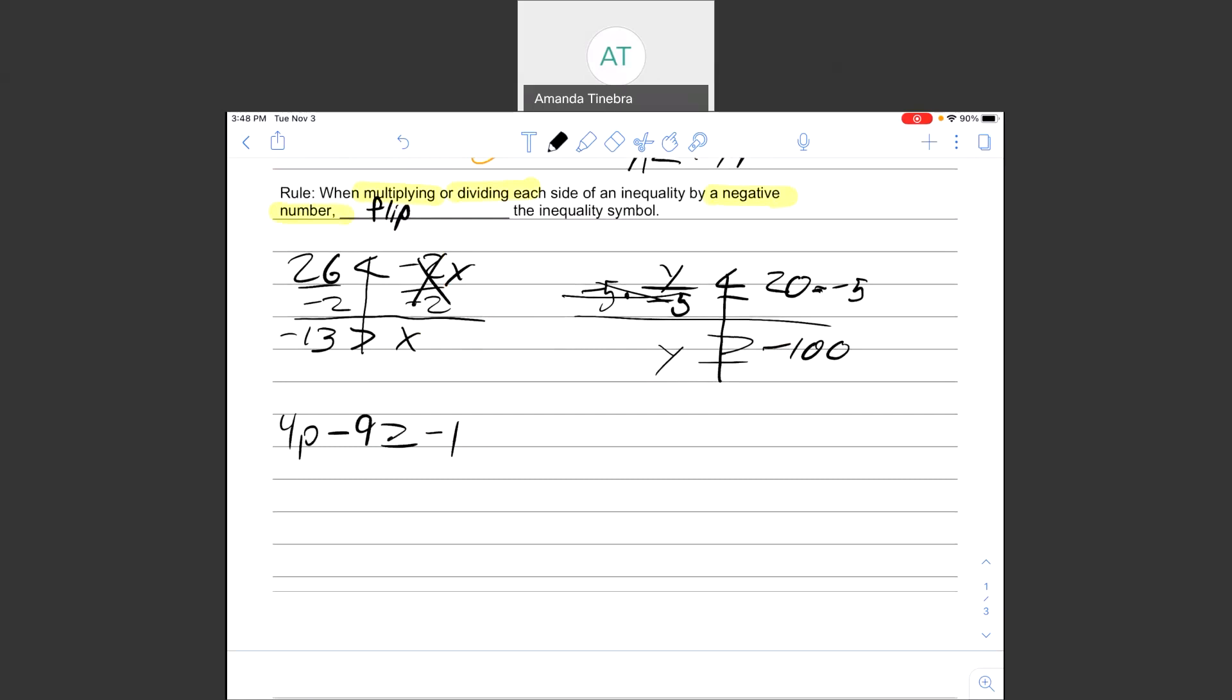Well, the first thing I would do is add 9 to each side. Remember, when we're adding or if I were subtracting, adding and subtracting does not make me flip my inequality. So my inequality is still the greater than or equal to, and I have 4p is greater than or equal to 8 because negative 1 plus 9 is 8.